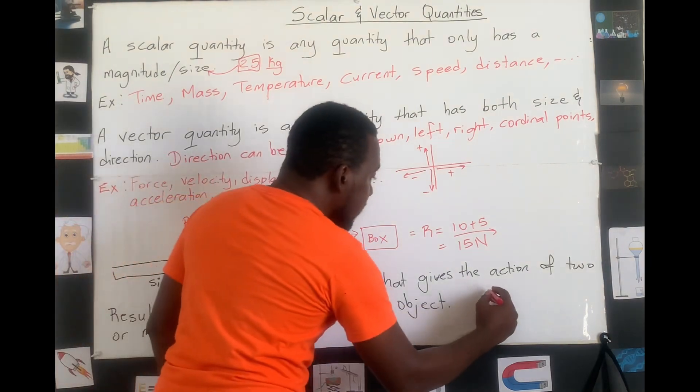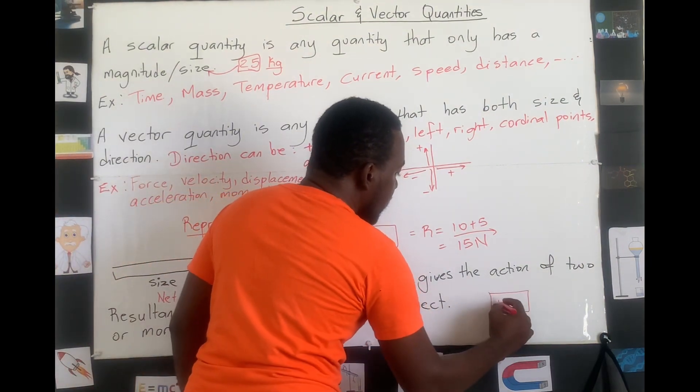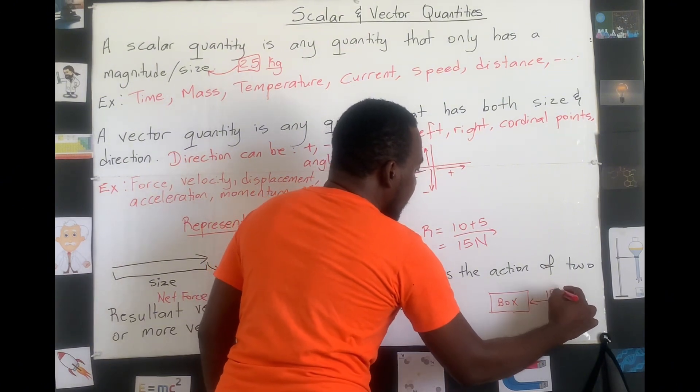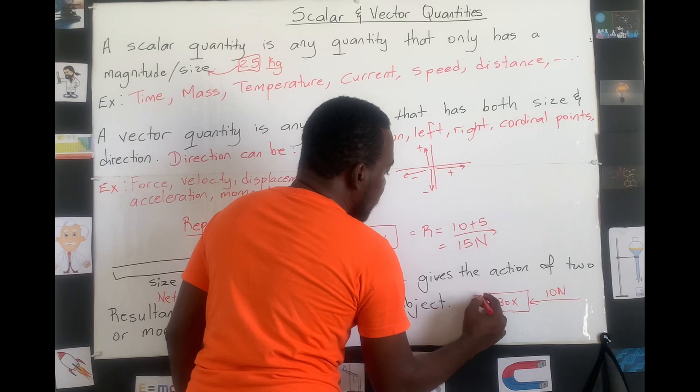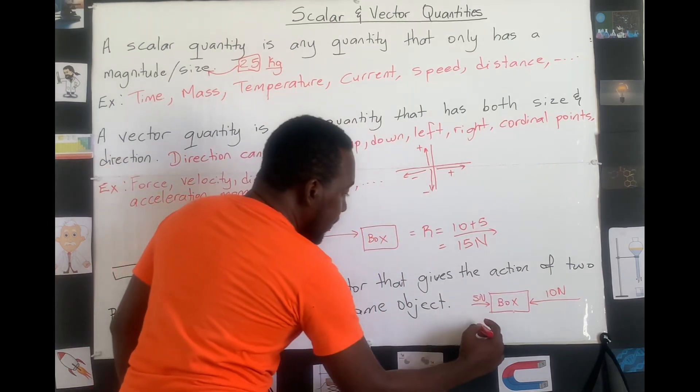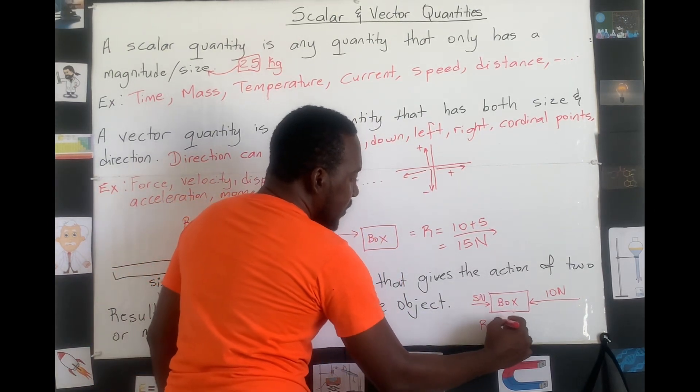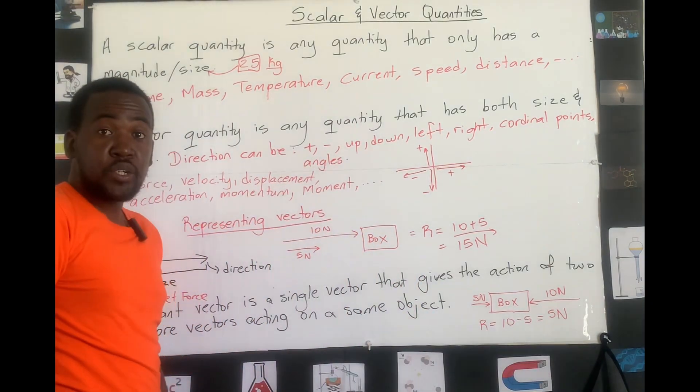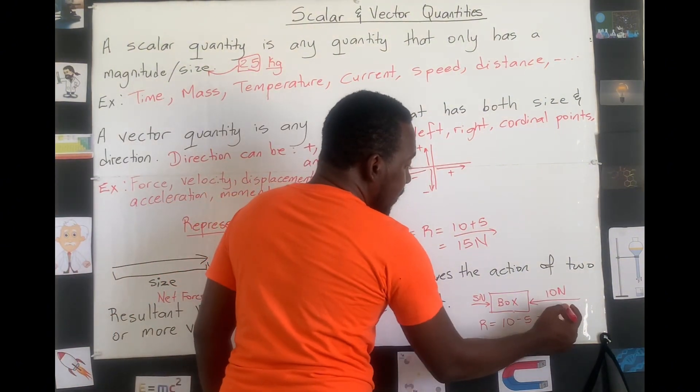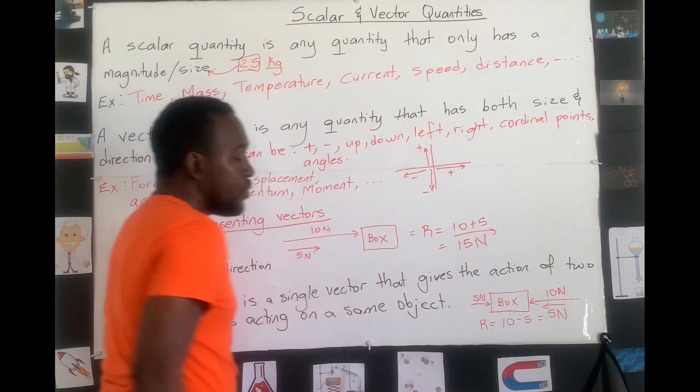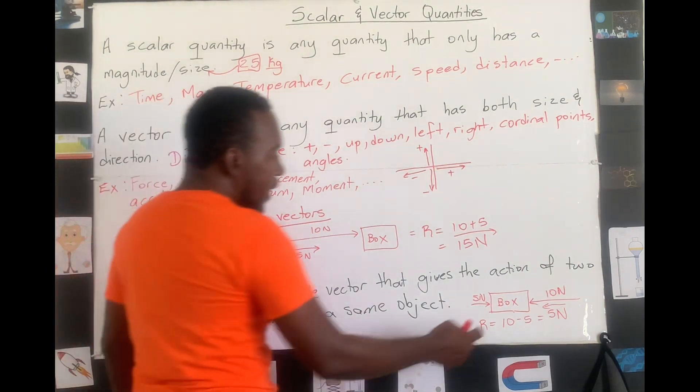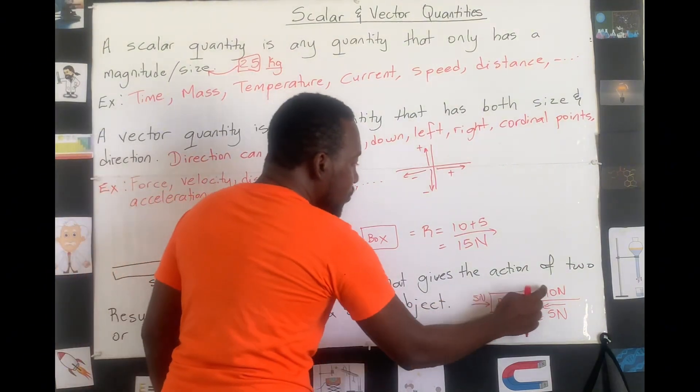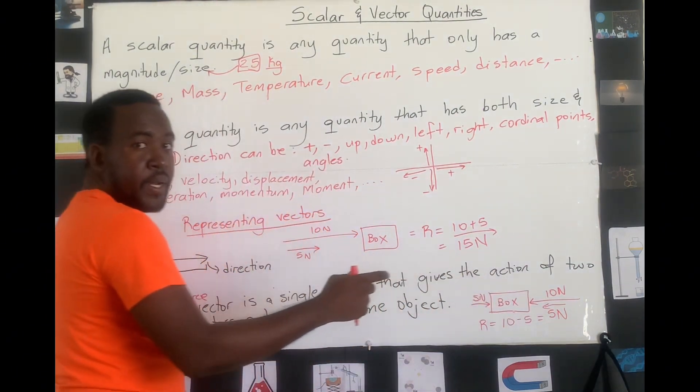But what if it was the same box and these two forces now go opposite to each other? We have the 10 going this way and the 5 going this way. Then we know that the resultant in this case would be 10 minus 5, which gives us 5N. The direction would be, it's going in the larger one, which would mean that the box would be going to your left. This 5N to the left is a resultant vector because it's the action of two vectors acting on an object.